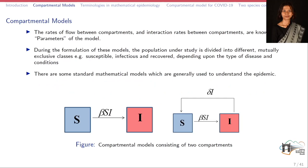There are various compartmental models in epidemiology which have been used for a long time to model different epidemics. Here we will start with the basic SI model. We will try to understand the basic SI, SIS, SEIR, and several other compartmental models which exist in the literature. The rate of flow between the compartments and the interaction rate between the compartments are known as parameters of the mathematical models.